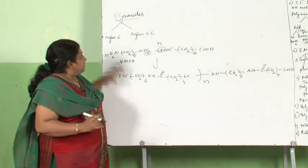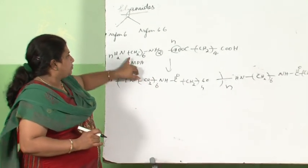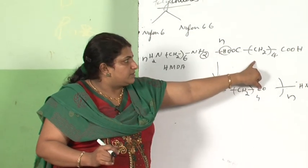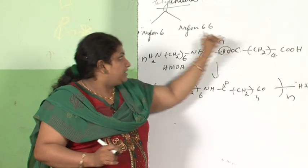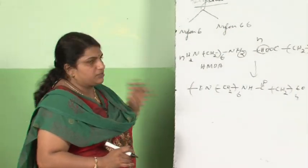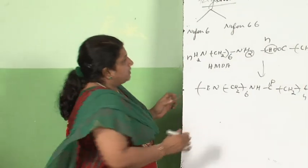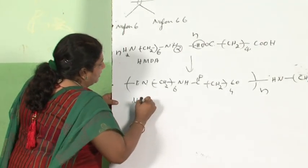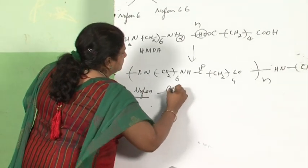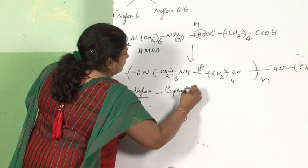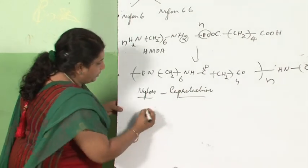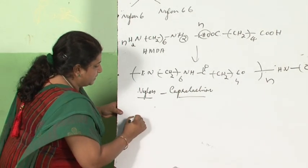This is nylon 6,6. As noted, one component has 6 carbon atoms and the other also has 6 carbon atoms, hence the name nylon 6,6. Next comes nylon 6, whose monomer is caprolactam.